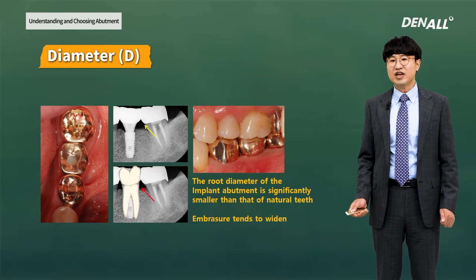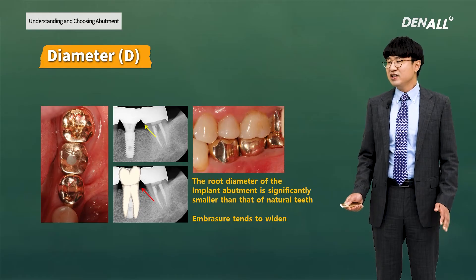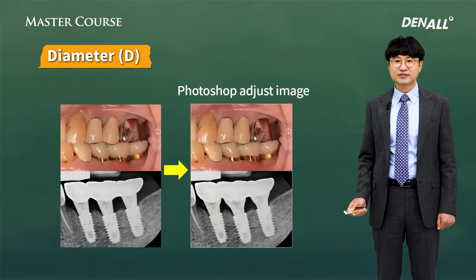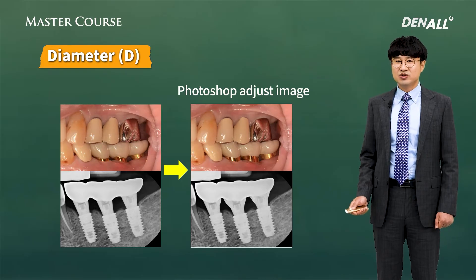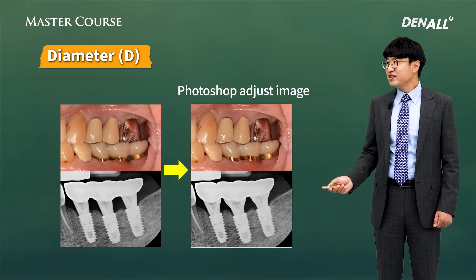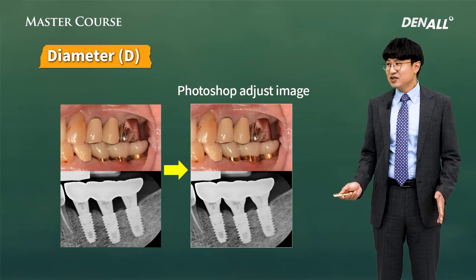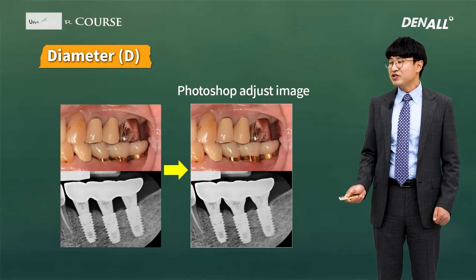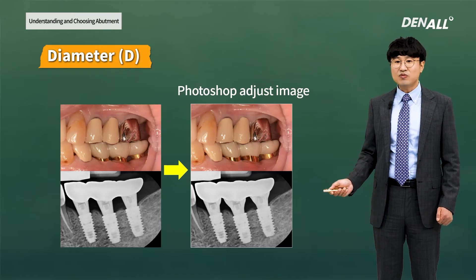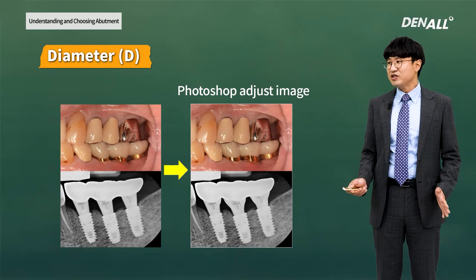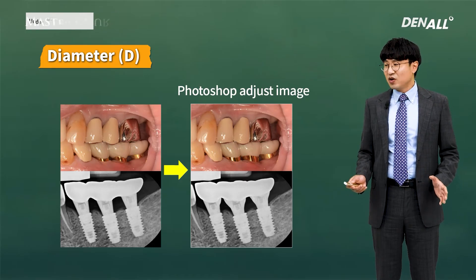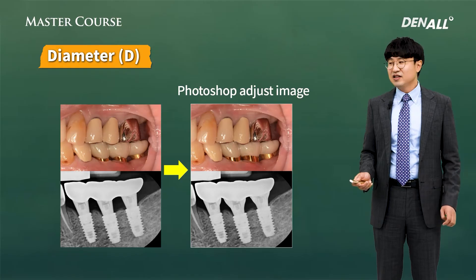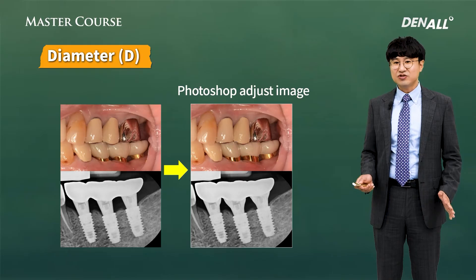The root diameter of an implant abutment is significantly smaller than that of the lateral teeth, so the embrasure tends to widen naturally. However, if placement depth is deep enough and soft tissue condition is not bad — the right photo is modified with Photoshop, it is not remade by me — the left one may be biologically acceptable, but from the patient's food impaction and retention perspective, it is not as good as the modified image. If the abutment diameter is too small, the embrasure becomes too big, which is not ideal. If it is too wide, it is not good biologically either, so you need to choose an appropriate abutment.